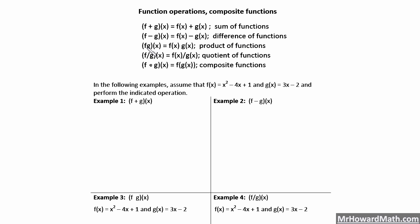We have f times g of x — that's f of x times g of x — and that is the product of functions. We have f divided by g of x, which means we take f of x and divide it by g of x, and that's the quotient of functions.